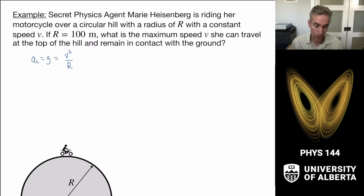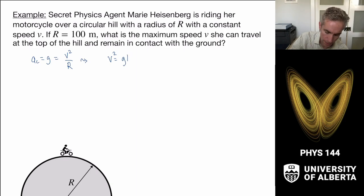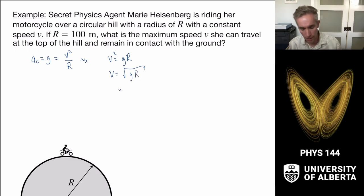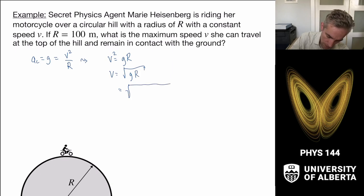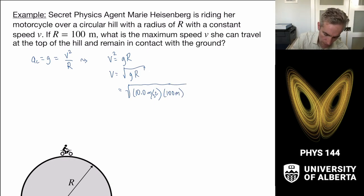This is asking: what is v such that I get an acceleration of g? Solving this problem, v squared equals g times r, so v is just the square root of gr. Plugging in, using 10.0 meters per second squared for gravity and a radius of 100 meters, we get 1000 meters squared per second squared, and the square root of that is 31.6 meters per second.